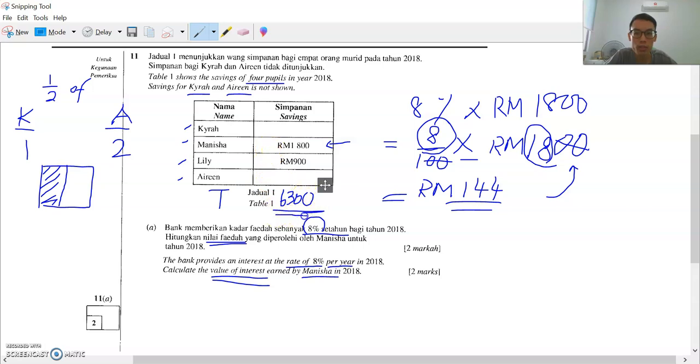How do we find Kaira's saving? Firstly, we take the total RM6300, we minus Manisha's saving, we minus Lily's saving. The balance will be Kaira's and Irene's saving. So number sentence 1: RM6300 minus Lily's saving.